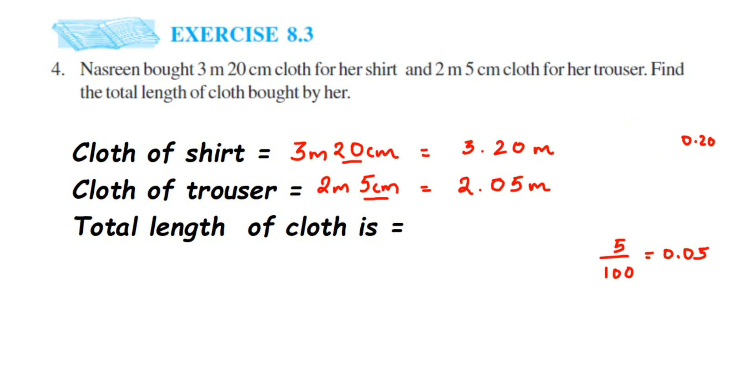So this will be equal to, now we have to add them. We have to find the total, so add it. It will be 3.20 plus 2.05 meter.